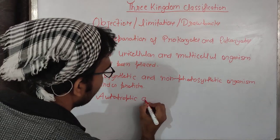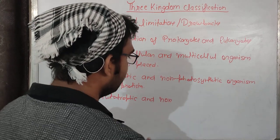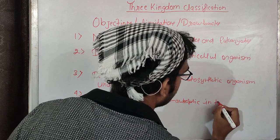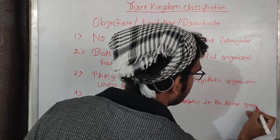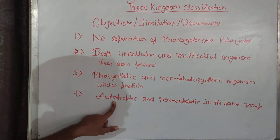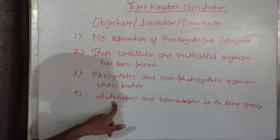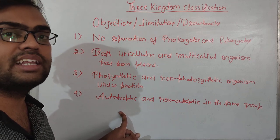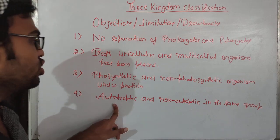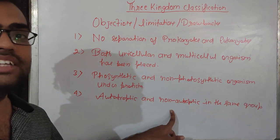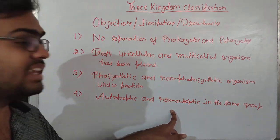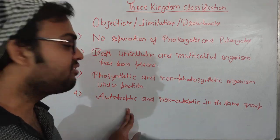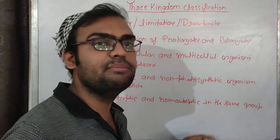The fourth drawback is that autotrophic and heterotrophic organisms were placed in the same group. Autotrophic organisms like some algae such as Chlamydomonas, and some bacteria like cyanobacteria, have the capacity to produce their own food. But heterotrophic bacteria and fungi, which are dependent on other organisms for food, were also classified in the same Protista group.